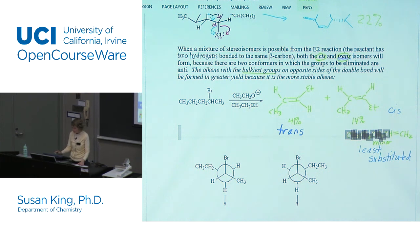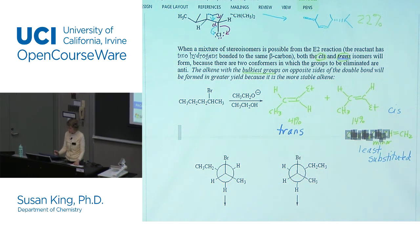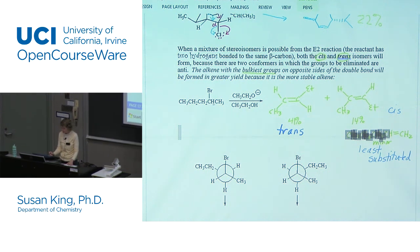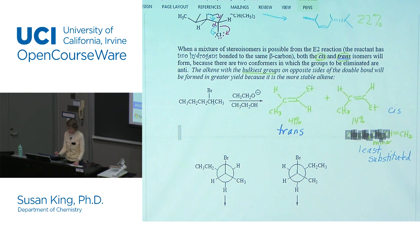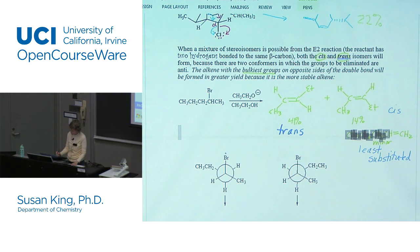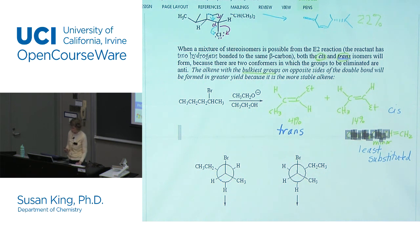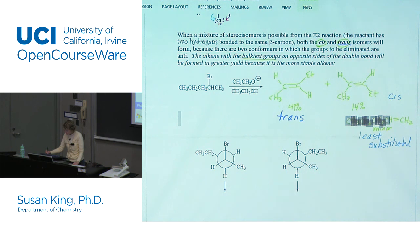All right, so let's show how we get these products. We can easily see how we can get the least substituted by eliminating right here at this carbon-carbon bond that I'm pointing to. All right, let's see how we get the cis and the trans. I put it into a Newman projection so you can see where that comes from, and so let's scroll down a little bit.